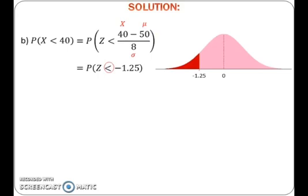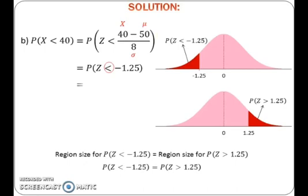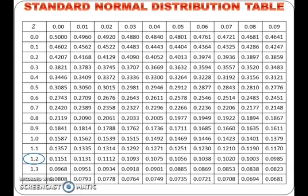To find probability, refer to the standard normal distribution table. Remember that the table gives probability of z greater than a certain positive value. For probability of z less than negative 1.25, if we reflect the graph to the positive side, we can see that the region for probability of z less than negative 1.25 is the same as the region for probability of z greater than positive 1.25. Probability of z greater than positive 1.25 can be obtained straight away from the table. Just locate 1.2 from the first column and 0.05 from the first row and read the corresponding probability in the body of the table.